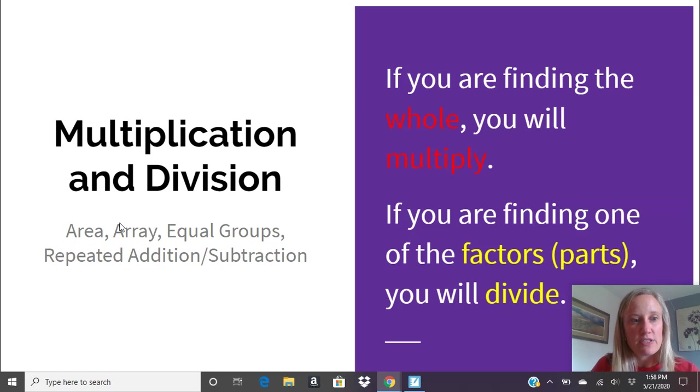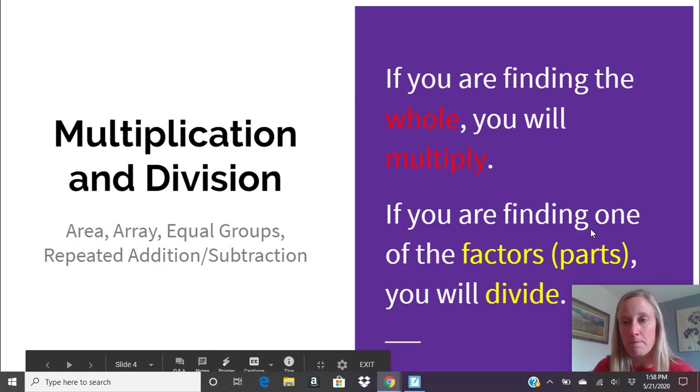So for example, if it's an array story, that's an easy one to give an example for. If you have an array, it means you have equal rows, correct? So if it's giving you the number of rows and the number in each row, and it says how many in all or how many all together, you're going to multiply. But if it tells you the total and it says there's six rows, how many in each row, that's where you're trying to figure out one of the parts. And so for that particular story, you would divide.